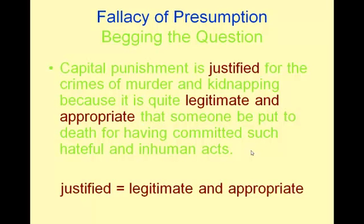Sometimes the circular reasoning is not always evident. For example: 'Capital punishment is justified for the crimes of murder and kidnapping because it is quite legitimate and appropriate that someone be put to death for having committed such hateful and inhuman acts.' Here, the word 'justified' means 'legitimate and appropriate,' so the words mean the same in both the premise and the conclusion, indicating there are no sufficient reasons given for the conclusion.